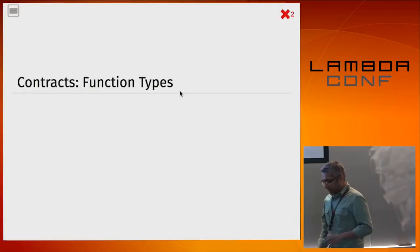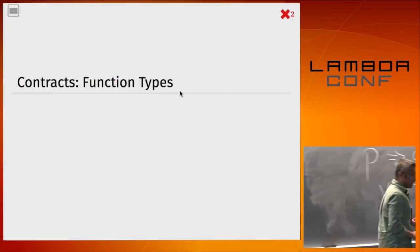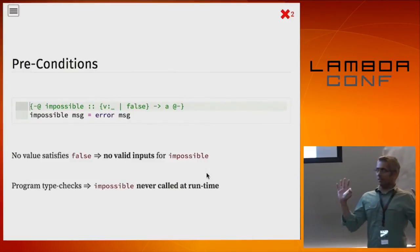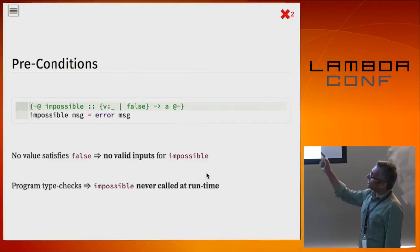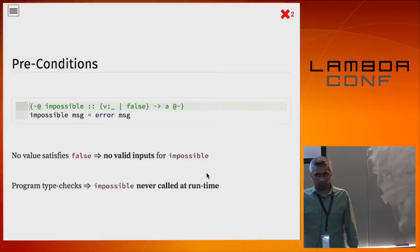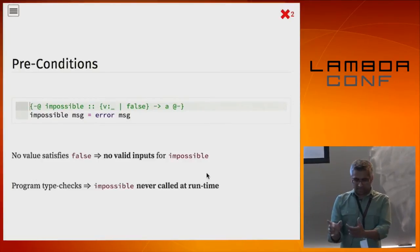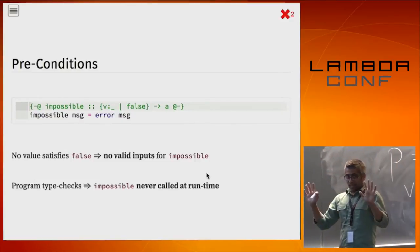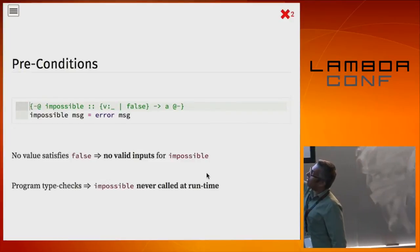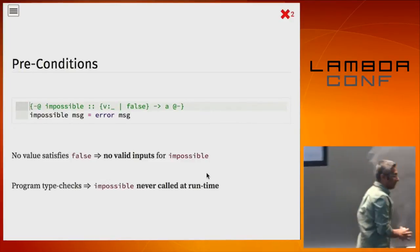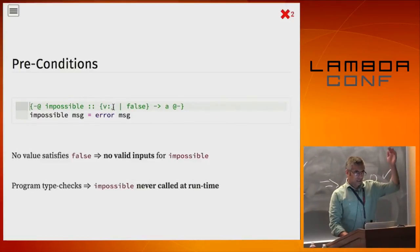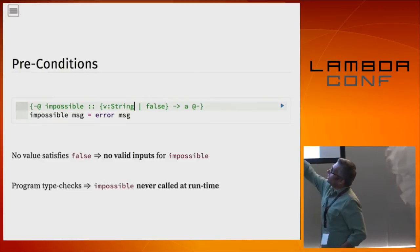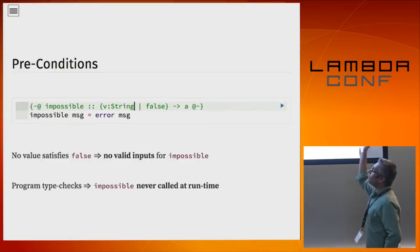Let's look at functions. Here's an interesting type: a function called 'impossible'. Impossible takes as input a string and just calls error on that string. The purpose of impossible is to denote all those cases where I want to say 'this will never ever happen at runtime'. The way I specify that is by giving impossible an input type where the refinement is 'v = false'. By the way, GHC has typed holes and we've also had them for a while.